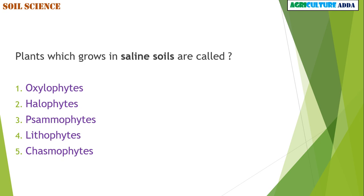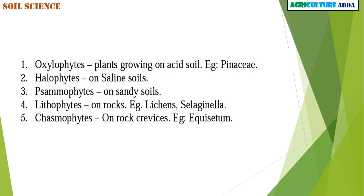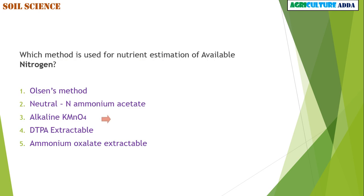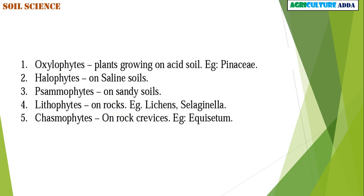In soil science, the first question is: plants which grow in saline soils are called? It is a very easy question. Options are: auxilophytes, halophytes, sammophytes, lithophytes, and chasmophytes. The answer is halophytes. Auxilophytes are plants growing on acid soil — example: Pinaceae.